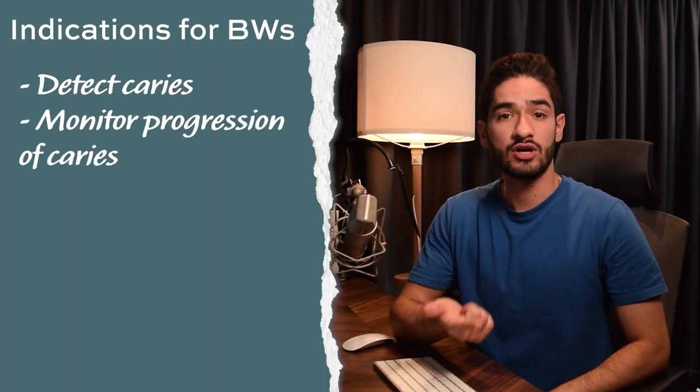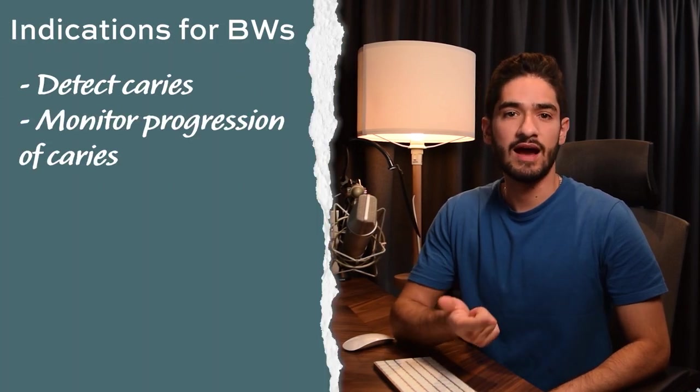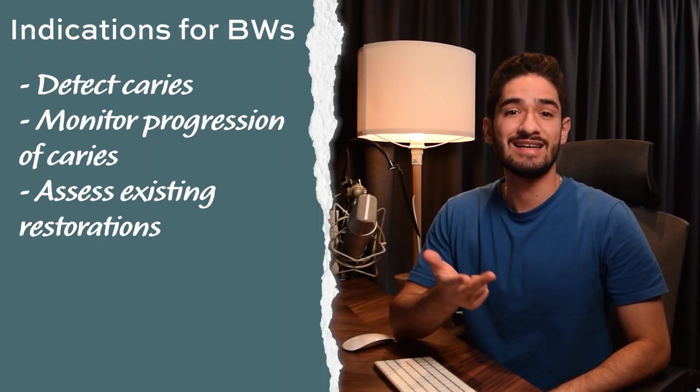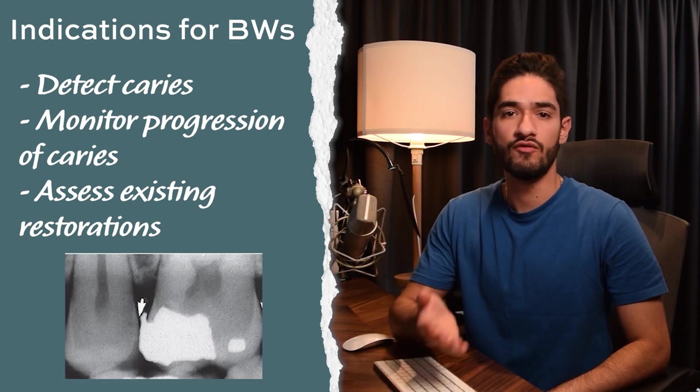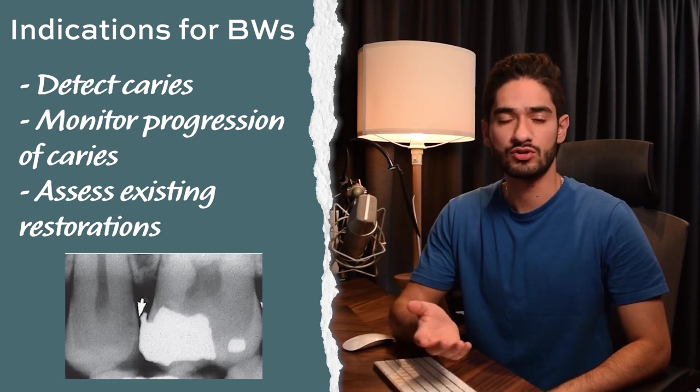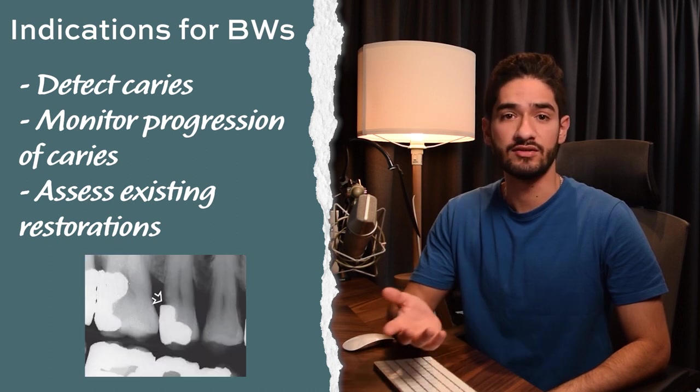Let's start with bite wings. I'm not going to cover how x-rays are taken or how they work, but let's talk about why we take bite wings in the first place. The main indications are to detect caries, monitor the progression of caries, and to assess any existing restorations — for example, overhangs on amalgams or secondary caries.